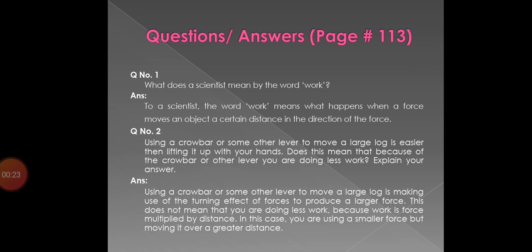Question number 1. What does a scientist mean by the word work? Answer: to a scientist, the word work means what happens when a force moves an object a certain distance in the direction of the force.